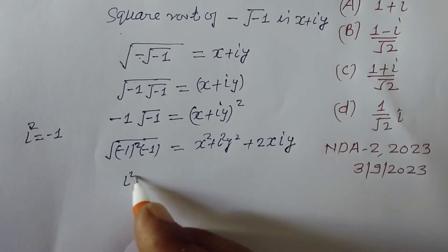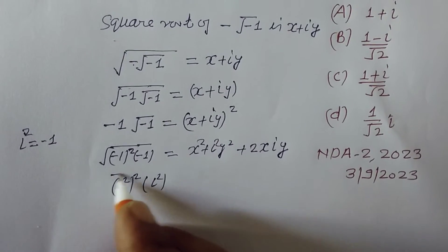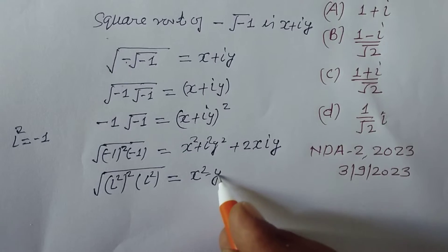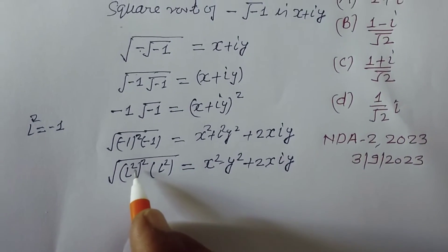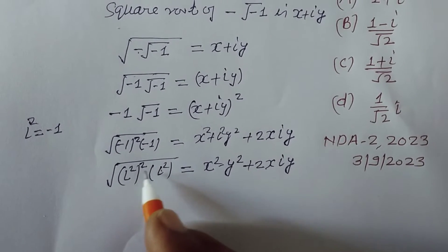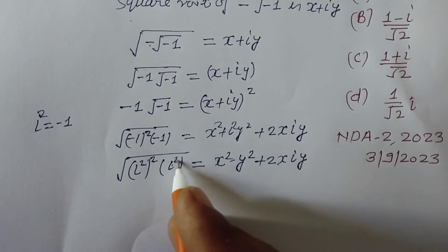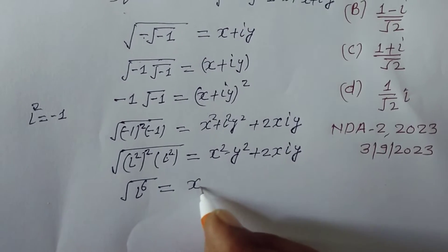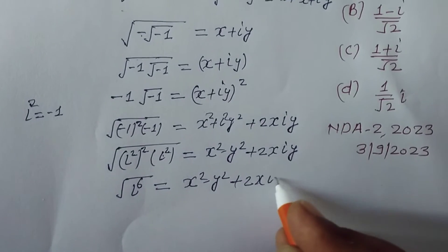Substituting i² = −1, we get x² − y² + 2x·iy on the right side. On the left, we work with i⁴ · i² = i⁶, which equals x² − y² + 2x·iy.